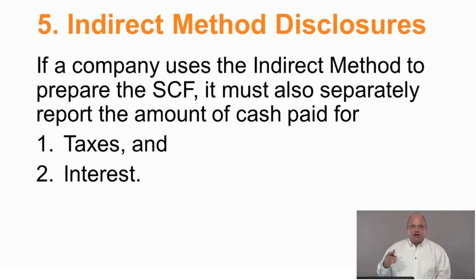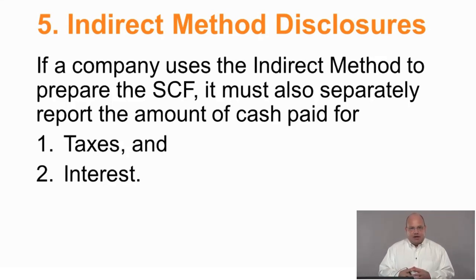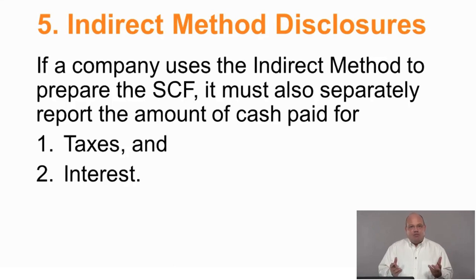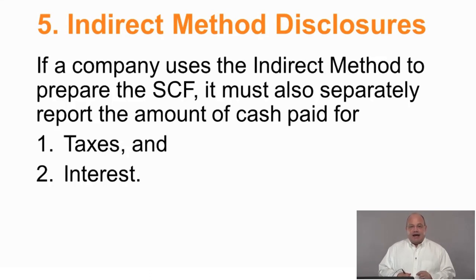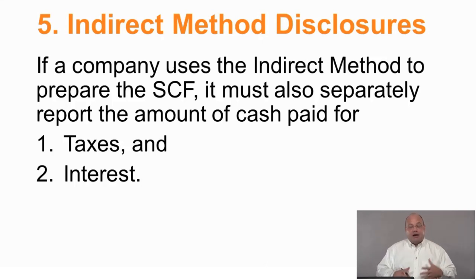To summarize preparing the indirect method: eliminate non-cash items from the income statement, eliminate non-operating activity transactions, and make adjustments for operating accounts using the rule — assets adjust opposite (asset goes up, subtract from net income), liabilities adjust the same way (liability increases, add to net income). Then make any adjustments for trading securities and disclose cash paid for taxes and cash paid for interest. The adjustments under the indirect method are exactly the same as under the direct method; what matters is how they are presented.